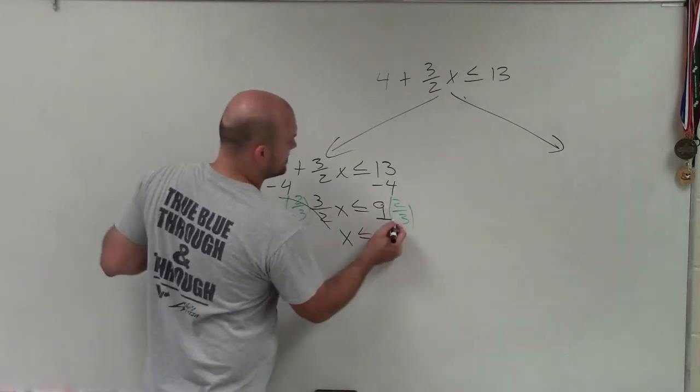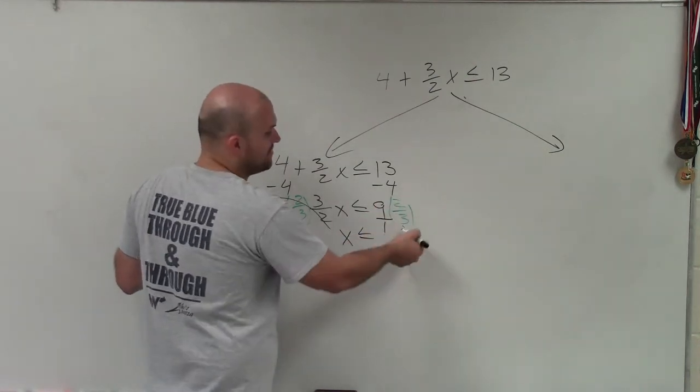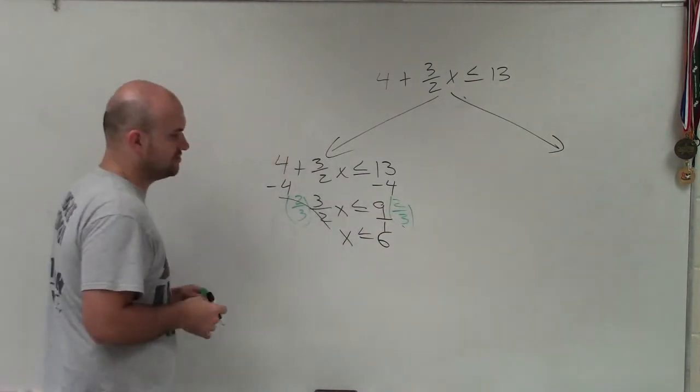Just multiply across. That's really 9 over 1. So 9 times 2 is 18. 18 divided by 3 is 6. x is less than or equal to 6.